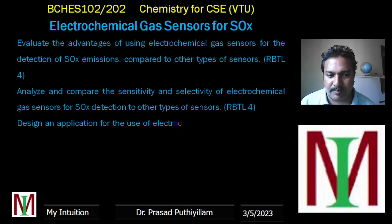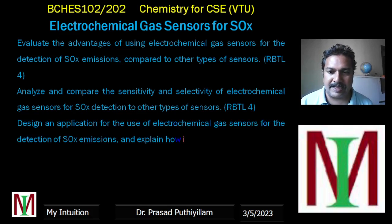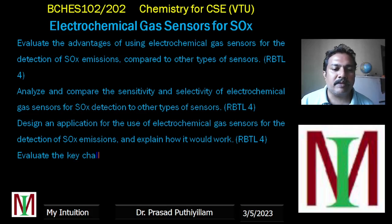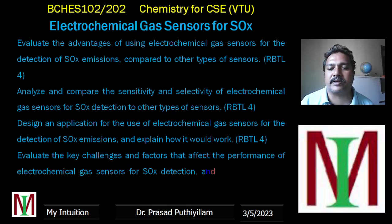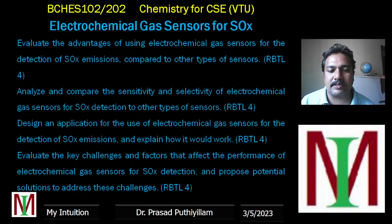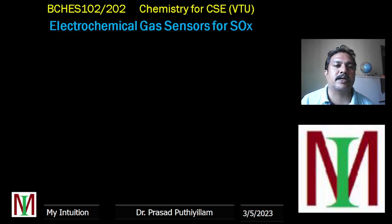Design an application for the use of an electrochemical gas sensor for the detection of SOX emissions and explain how it would work. Evaluate the key challenges and factors that affect the performance of electrochemical gas sensors for SOX detection and propose potential solutions to address these challenges. All of these are level four questions — eight questions total.